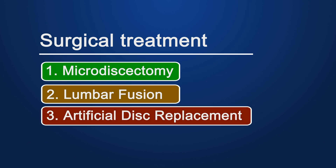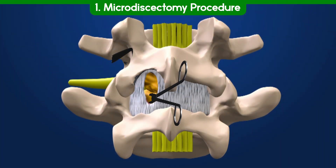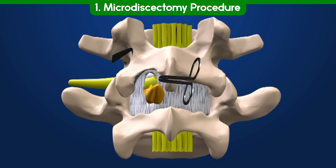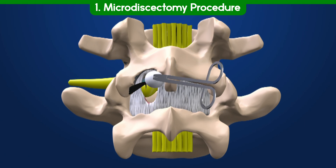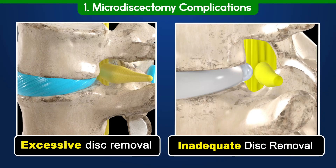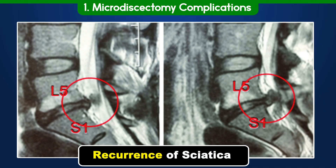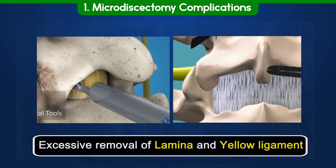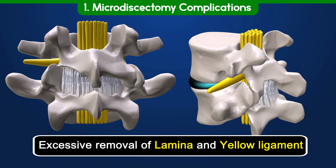Orthopedic surgeons or neurosurgeons generally prefer surgical treatments. 1. Microdiscectomy: This procedure involves creating a small opening in the back to remove the herniated disc. Accessing the nerve root often requires removing a small section of the lamina and yellow ligament. Excessive or inadequate disc removal are the most common issues that can lead to the recurrence of sciatica. Additionally, excessive removal of lamina and yellow ligament can cause spinal instability.